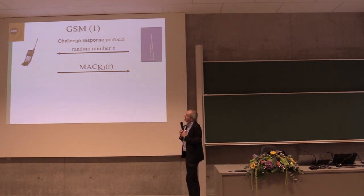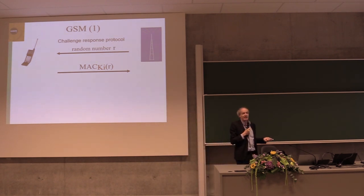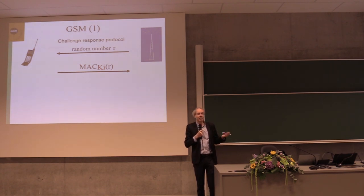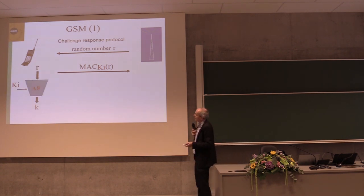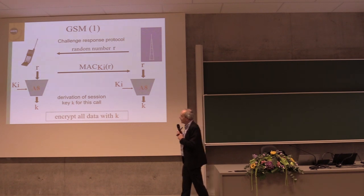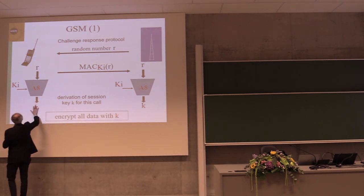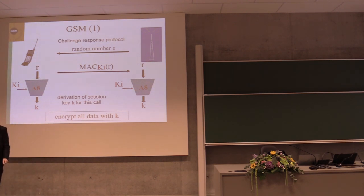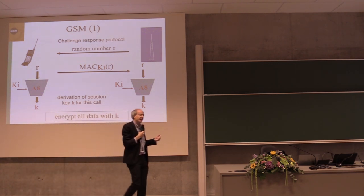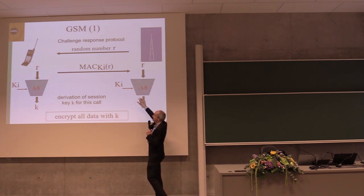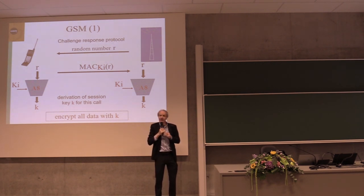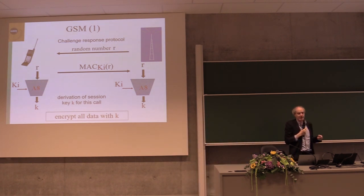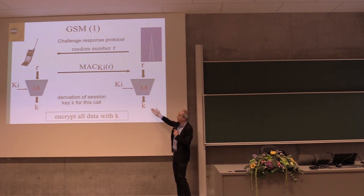There is a database of all user keys at the operator, and a KI in the SIM card. This authenticates you as a user to the network, preventing attackers from making calls at your expense. But it would be easy to take over the connection by jamming GSM. To prevent this, you derive a session key using algorithm A8 — you take the KI and derive session key K, which is used to encrypt communication. The base station only gets the challenge, the response, and the session key.